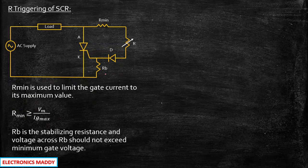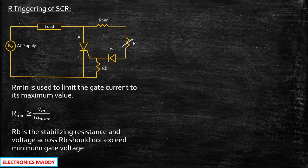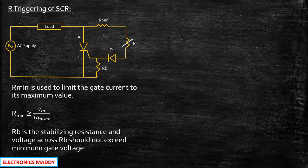R-B is called a stabilizing resistor, and the voltage across R-B should not exceed the minimum gate voltage. For example, if we want a gate voltage of about 0.3 to 0.4 volts, R-B will ensure that only that amount of voltage is supplied to the gate terminal. That is why you need a stabilizing resistor connected across gate to cathode terminal.